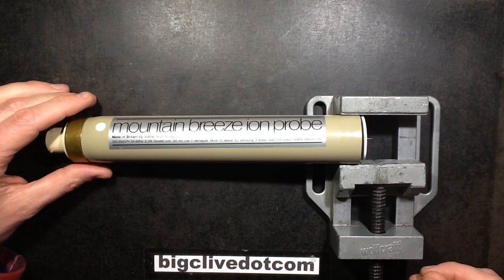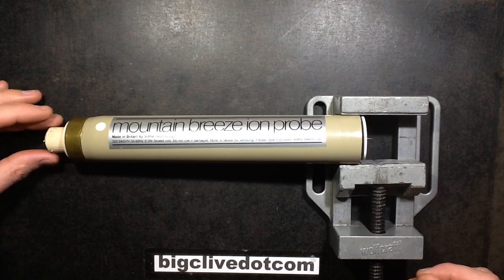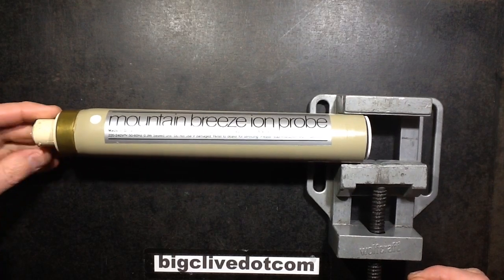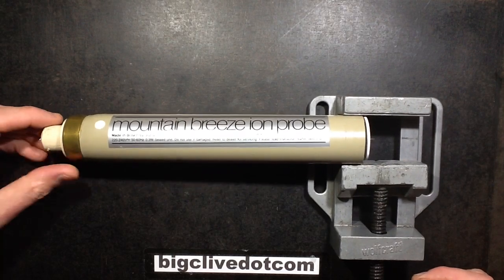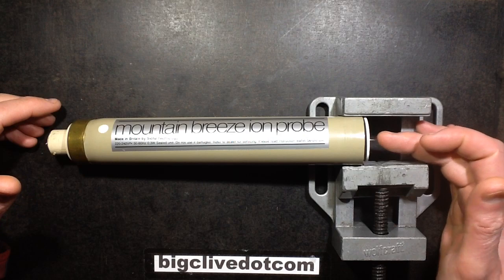This is a Mountain Breeze Ion Probe Ionizer, basically a tubular ionizer designed to go into a standard British bayonet cap lamp holder with an ionizing needle on the tip.